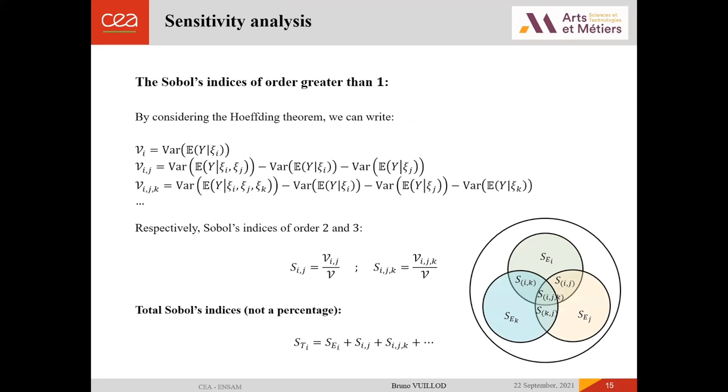We have also the total Sobol's indices. You can see in the bottom of this slide that the total Sobol's index linked to one parameter is equal to the sum of the elementary Sobol's index of this parameter, summed with the Sobol's indices of order greater than one. You can note that Sobol's indices of order equal to two is equal to the ratio of the second term of the Hoeffding theorem normalized by the variance of our output y. Indices of order equal to three is in the same way built thanks to the third term of the Hoeffding theorem normalized by the variance of our output. To illustrate that, I put a little scheme on the right with the different dependence between the different Sobol's indices.